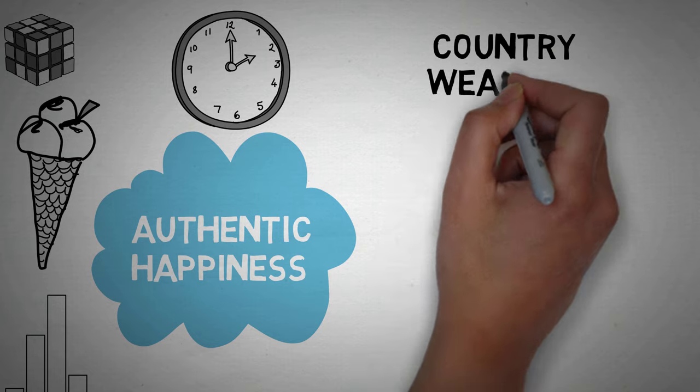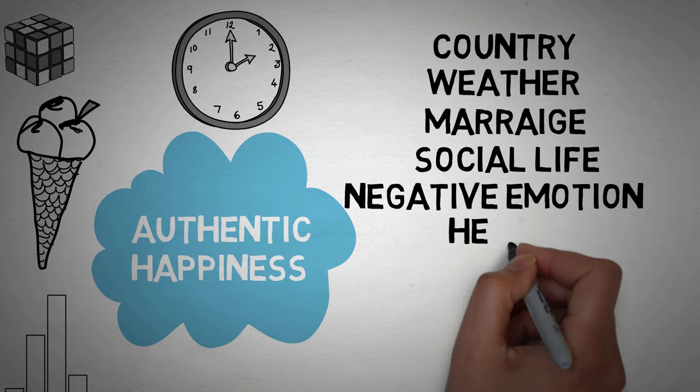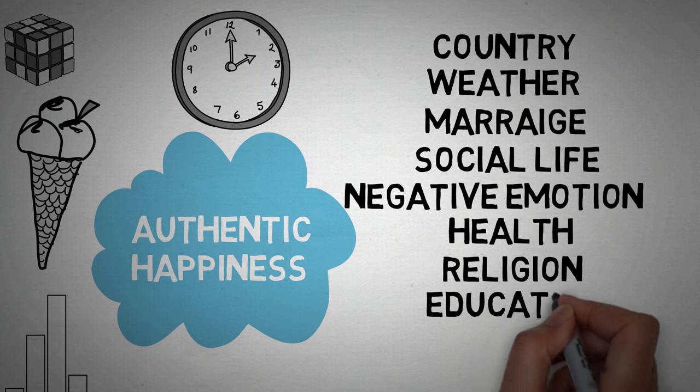Stuff like the country that someone's living in, the weather, marriage, social life, negative emotion, health, religion, and even education. They wanted to find out if any of this stuff contributed to happiness.